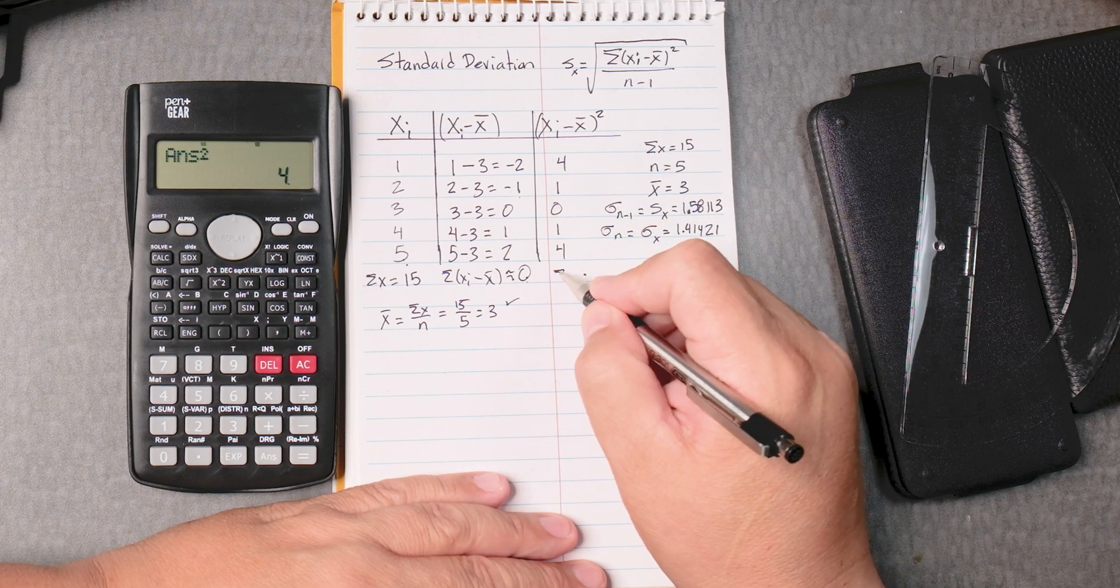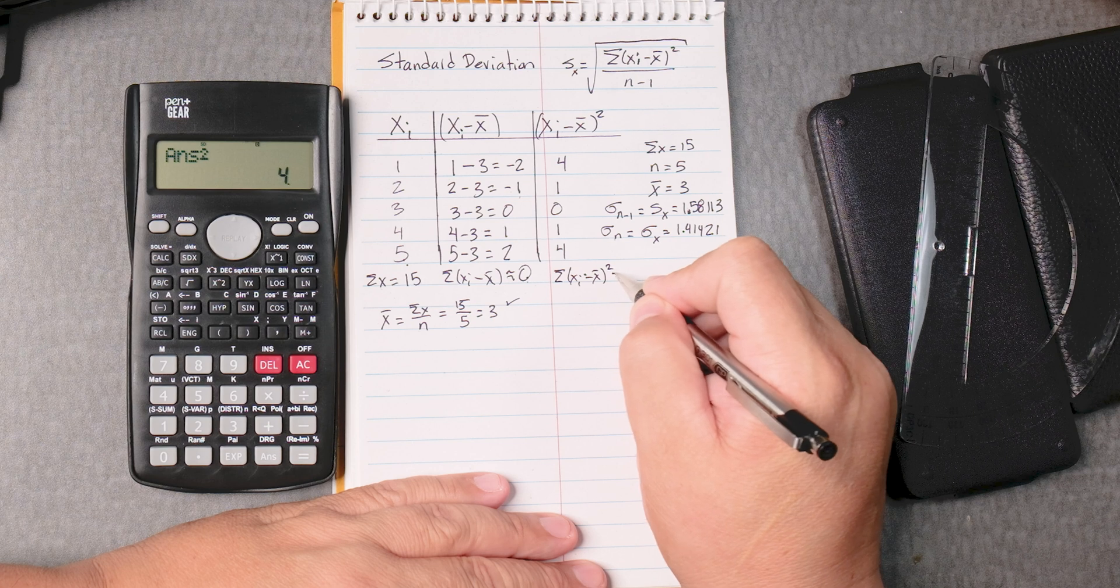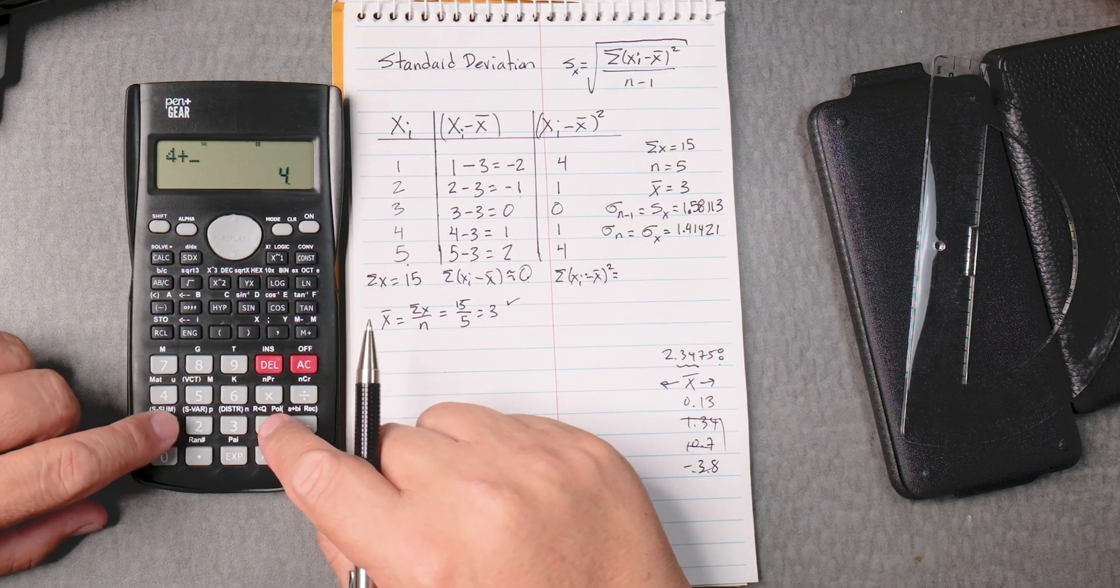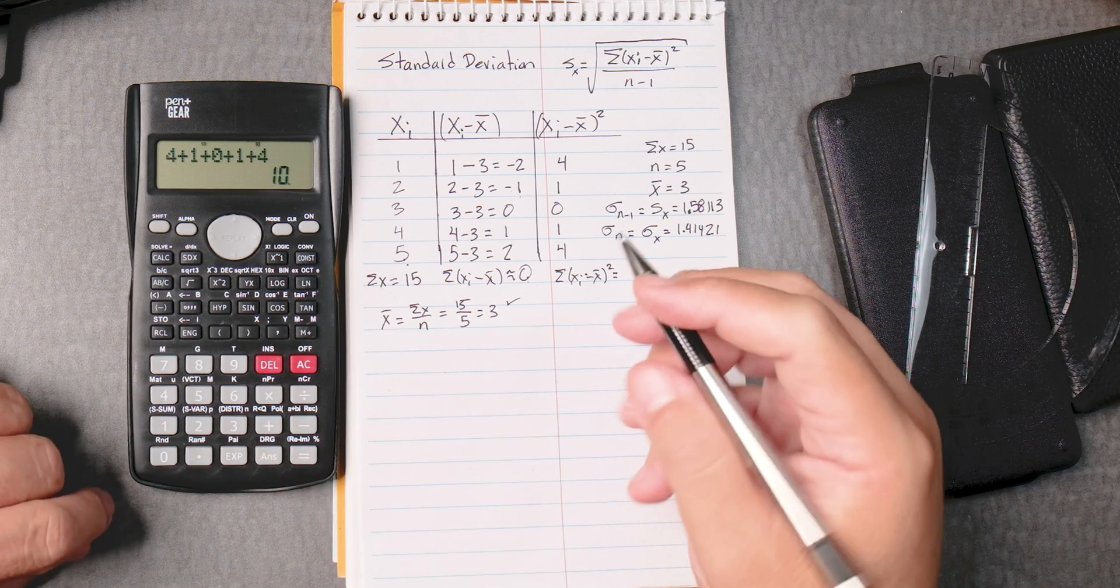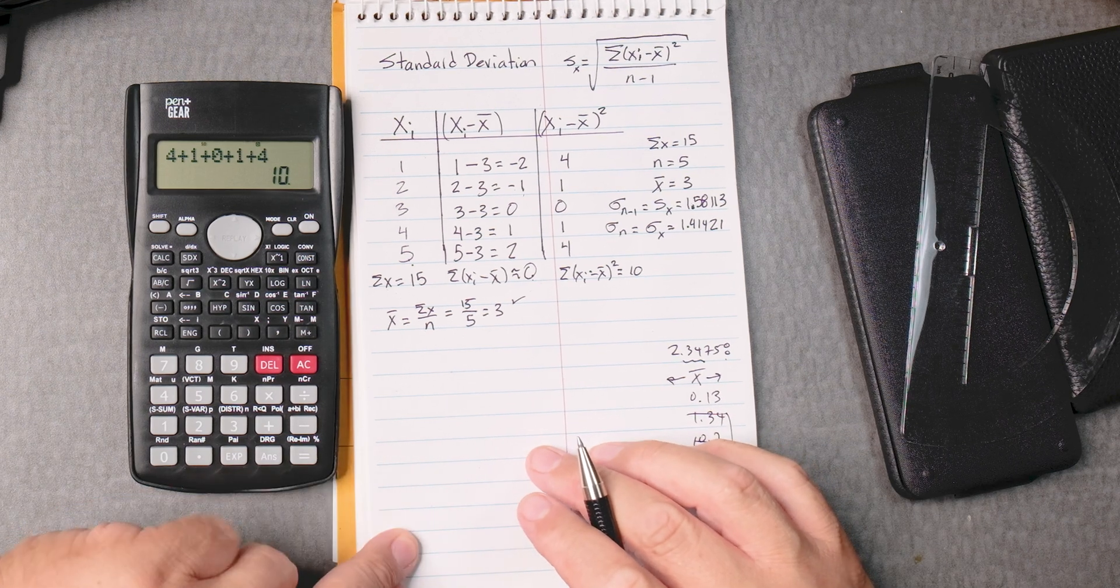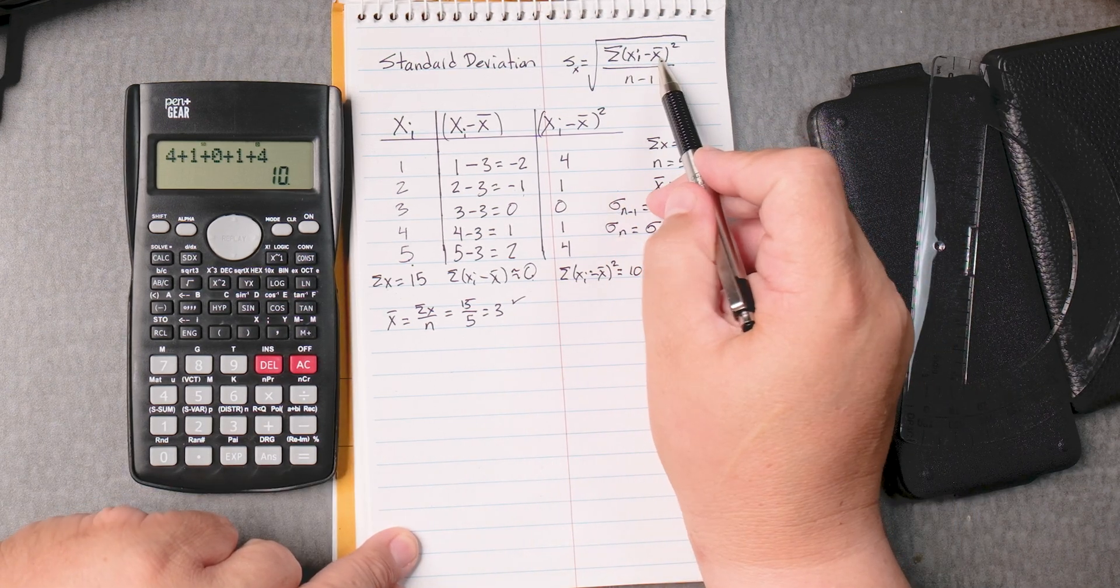Then the sum of xi minus x bar squared, what is that equal to? If we add these numbers, 4 plus 1 plus 0 plus 1 plus 4 and that's equal to 10. So that is the answer for the top here. So let's do that.